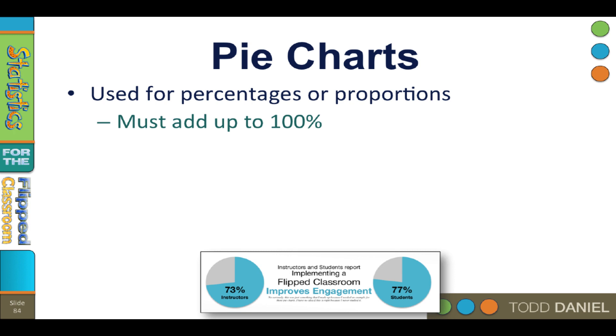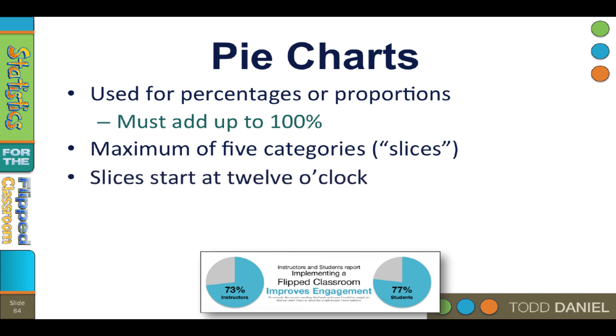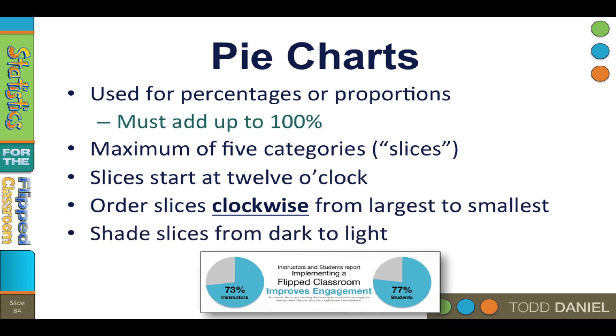So here are some rules for pie charts. Use no more than five variables in a pie chart. Keep it clean. The first variable should begin at 12 o'clock and proceed from the largest slice to the smallest in a clockwise direction. The first largest slice of the pie should be the darkest. Each smaller slice is sequentially lighter. Arrange from darkest to lightest.